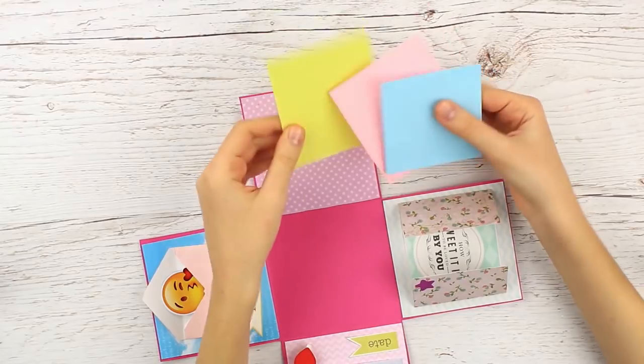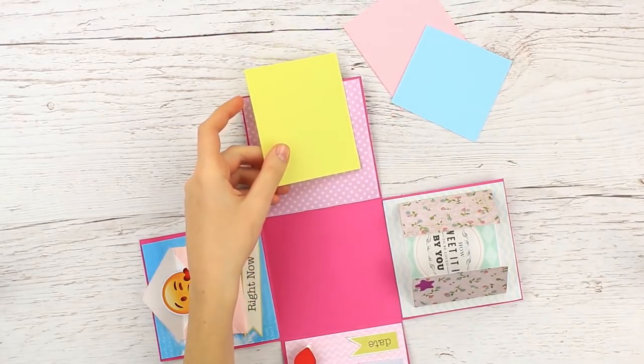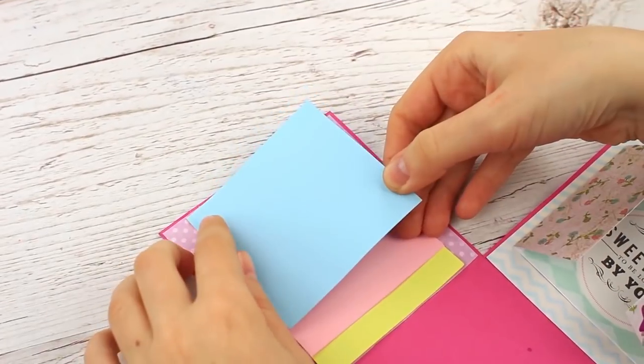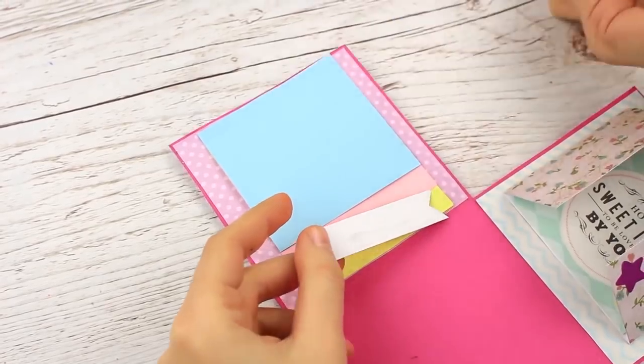Prepare color paper for the fourth square. Attach each page across the top. You should get a small notepad. Add a tag.